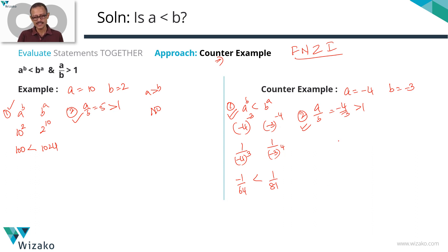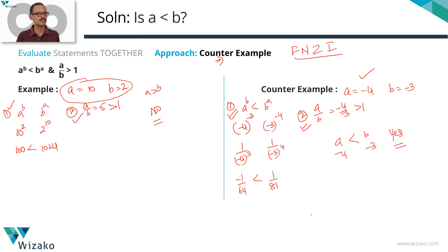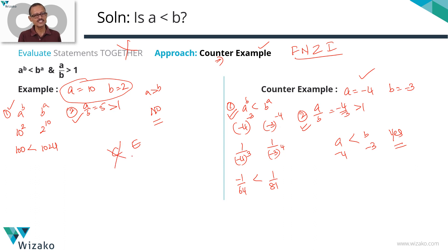With a = -4, b = -3: on the number line, -4 is to the left of -3, so a is less than b. The answer to 'is a less than b?' is yes. So combining the statements: with (10, 2) we got no, and with (-4, -3) we got yes — both satisfying both statements. A counter example exists even when combining, so statements together are not sufficient. Eliminate C; the answer is E.